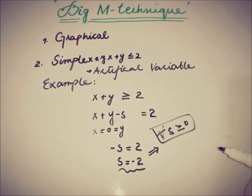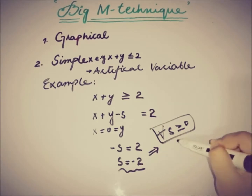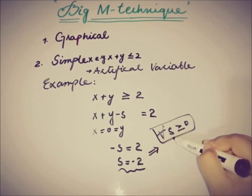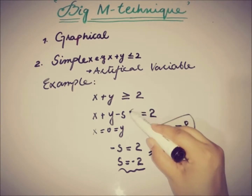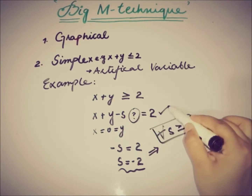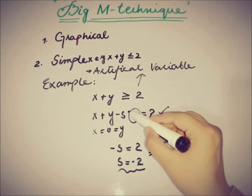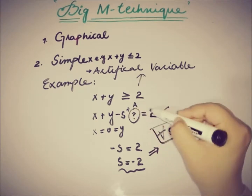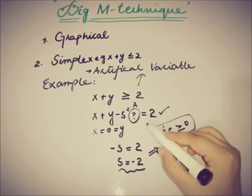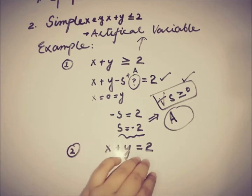This assumption was discussed in a previous video when explaining how to add or subtract the surplus variable depending on the constraint sign. This contradicts the behavior of the surplus variable, so there is a need to add something to make it stable. That is why we add the artificial variable — plus A — so that x plus y minus s plus A equals 2, making the definition of non-negativity valid.